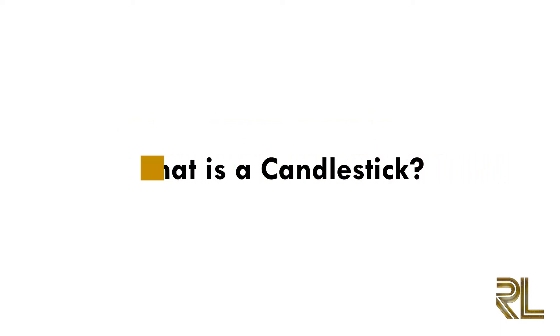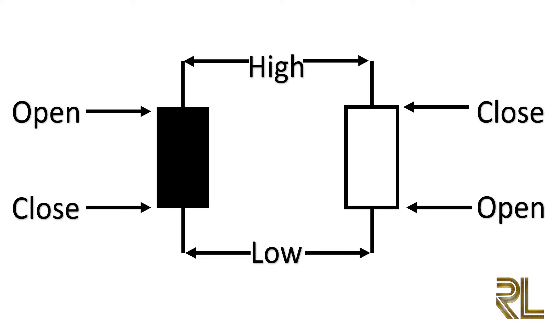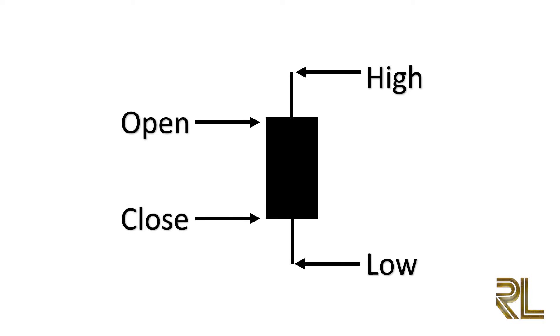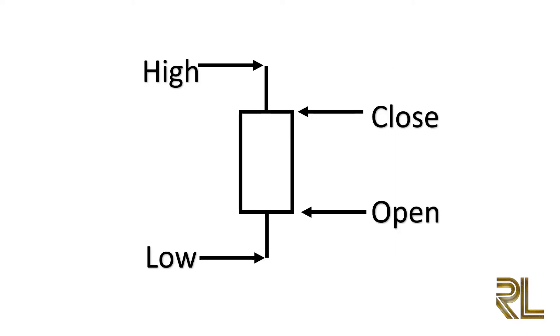What is a candlestick? A candlestick is a tool used to describe the price movement during a given time frame. Candlesticks are formed using the open, high, low, and close — also known as OHLC. Traditionally, if the block in the middle is filled or colored in, then the currency pair closed lower than it opened. For filled blocks, the top of the block is the opening price and the bottom is the closing price.